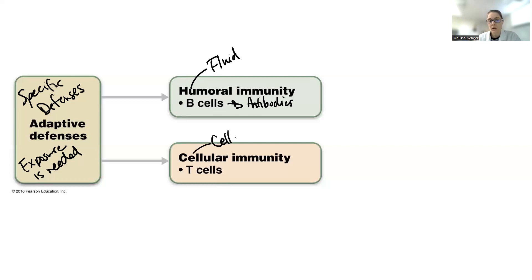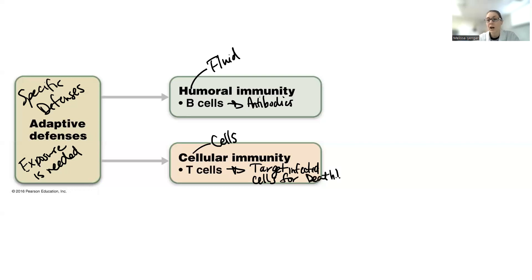Because we have pathogens that do much more than just float around in blood — they also invade cells, like viruses — we're going to need cellular immunity. In this case, we're going to use T cells or T lymphocytes, and what they're going to do is target infected cells and remove them. Sometimes they tell the infected cells to kill themselves, and sometimes they release chemicals to kill the cells specifically.